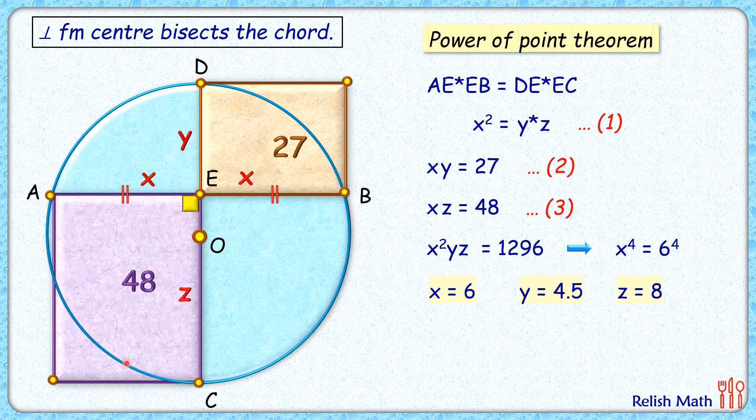Now in this circle, DC is passing through the center of the circle. So DC is the diameter. The diameter is y plus z. Putting the value of y and z, we get diameter is 12.5 centimeters, and radius will be half of it, or 6.25 centimeters. And that's our answer.